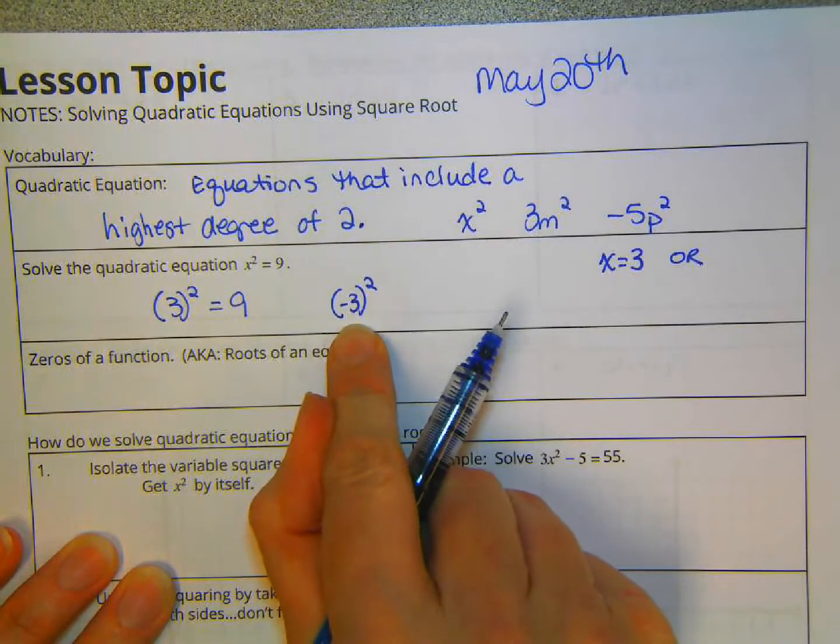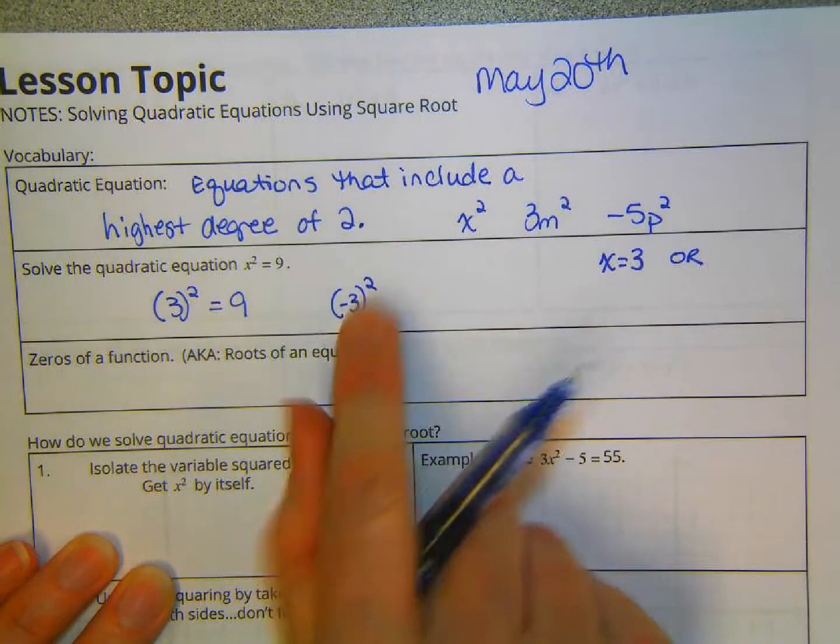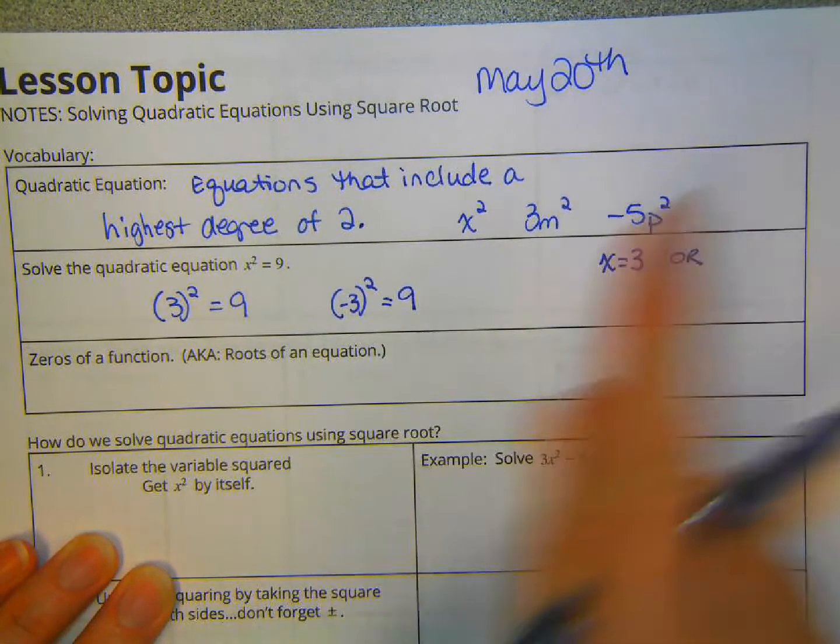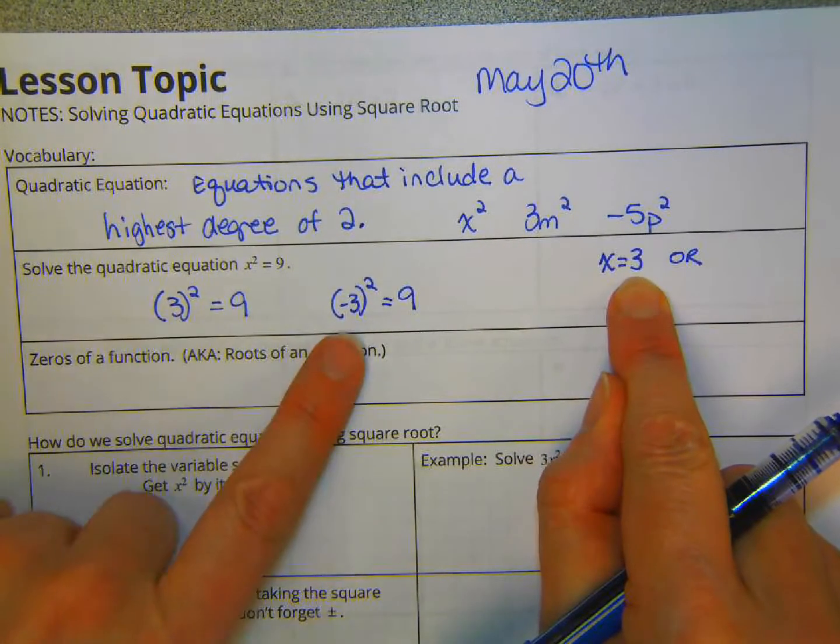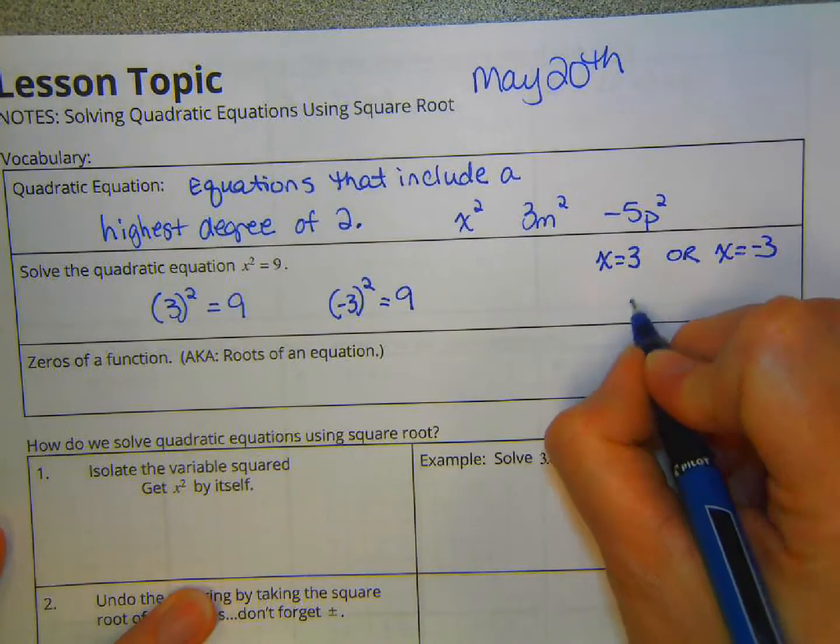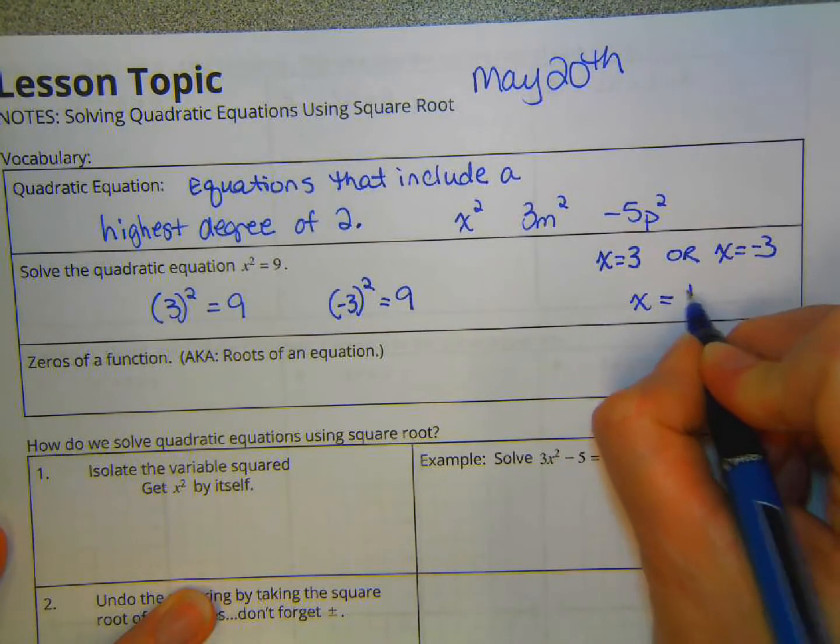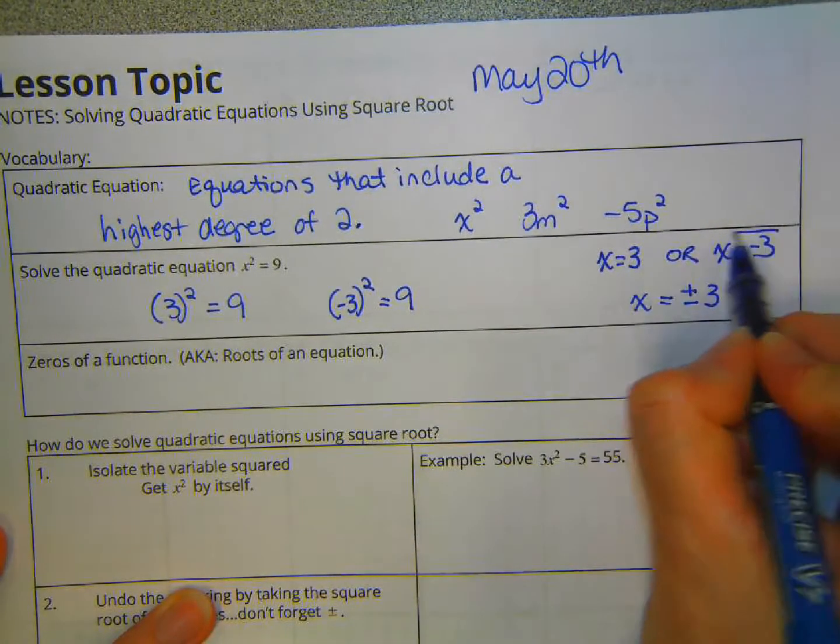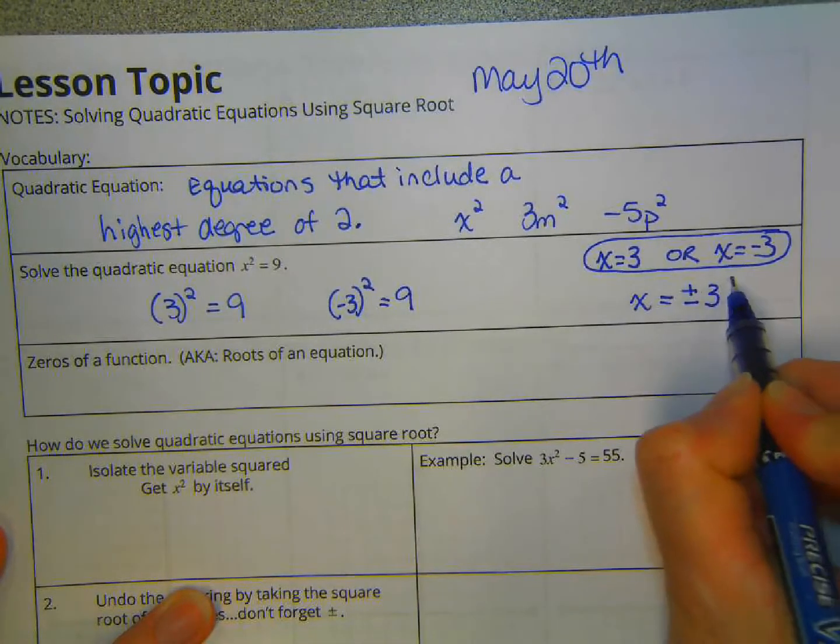Negative three. If we were in the classroom, I'd make you struggle with that a little bit more. But negative three times negative three gives us nine. So x is either three, or x is negative three. Another way that we can write this is plus or minus three. So you can either write it this way, or you can write it this way.